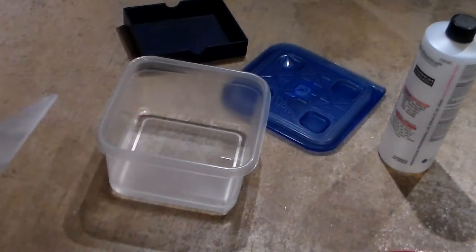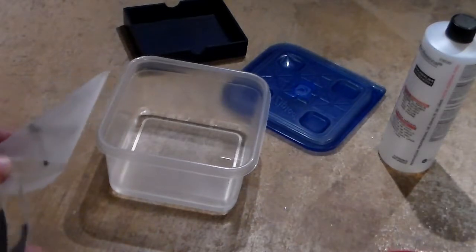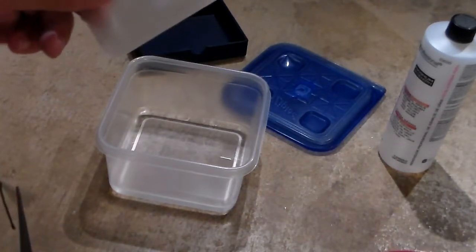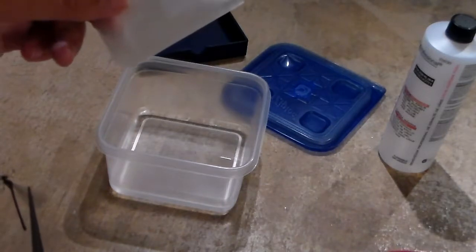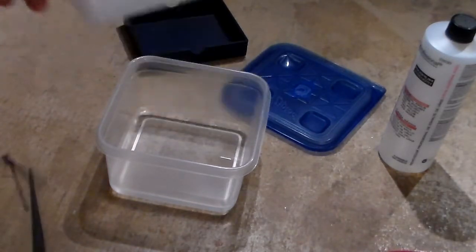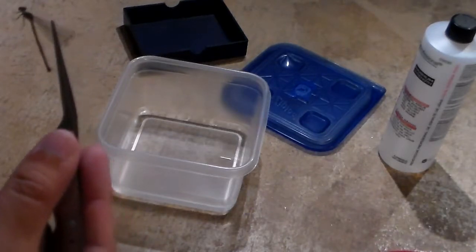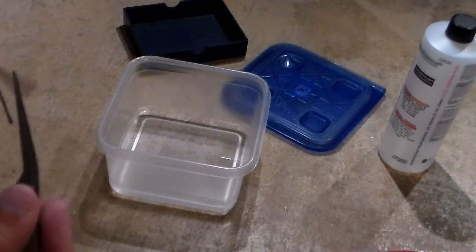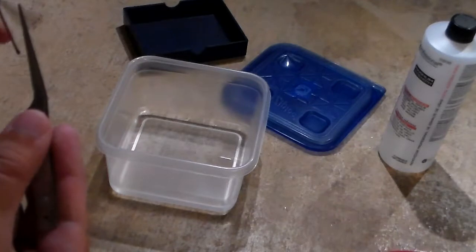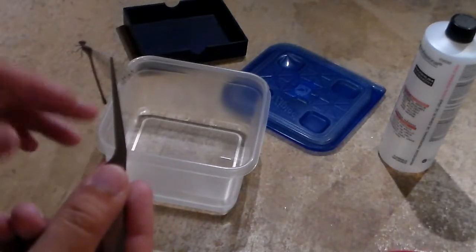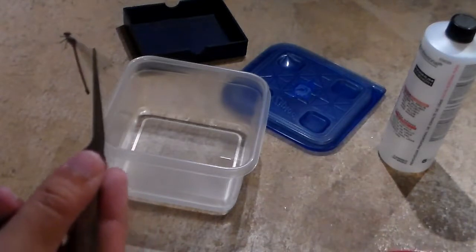Before you get to this point, you want to keep the dragonflies and damselflies alive so they defecate. You catch them in the morning and leave them in envelopes all day, then in the evening, which is what I do, it gives them enough time to defecate and empty their digestive tract. You don't want that stuff in there, so when they empty it, it helps them preserve a little better.